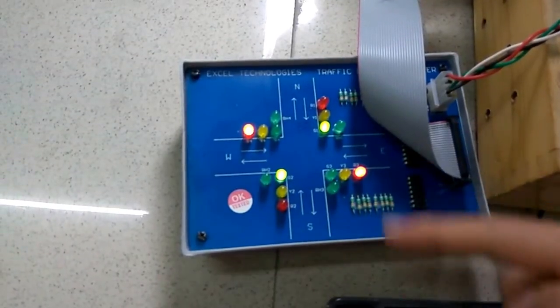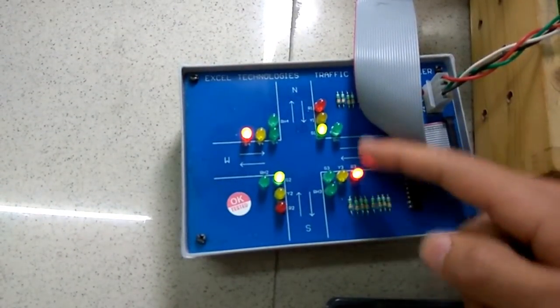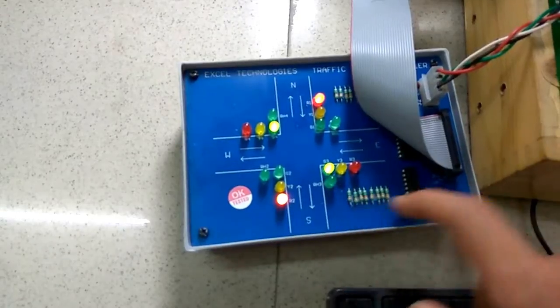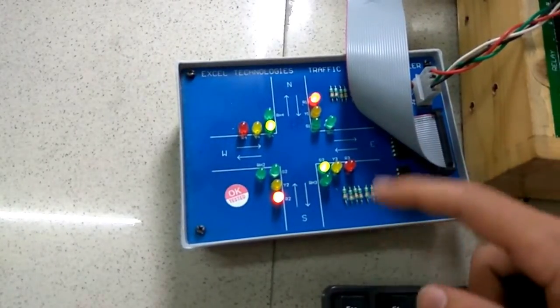As you can see, only the opposite lanes, here only north-south lanes are allowed. Then, after a delay, east-west lane is allowed to go and north-south is made to stop.